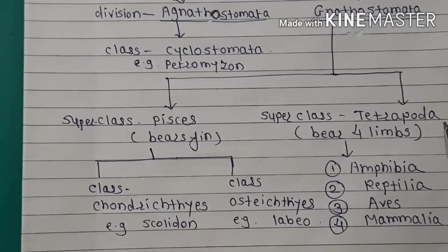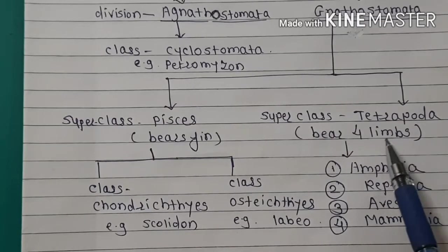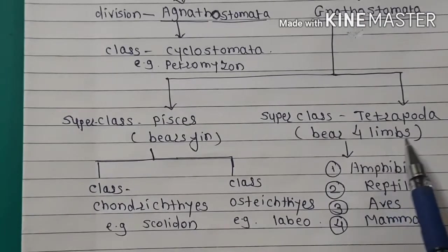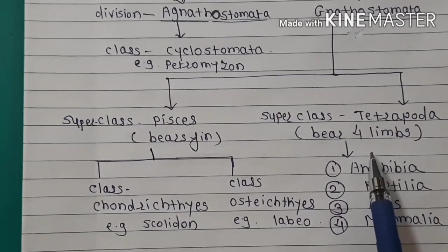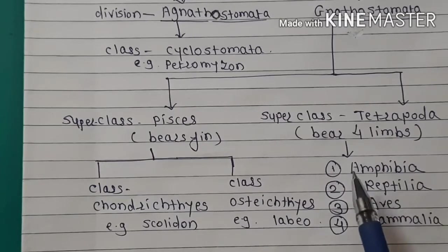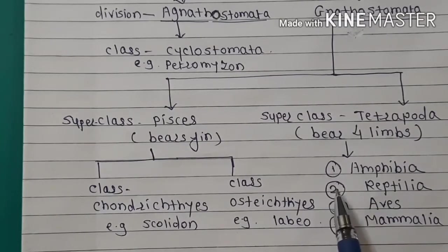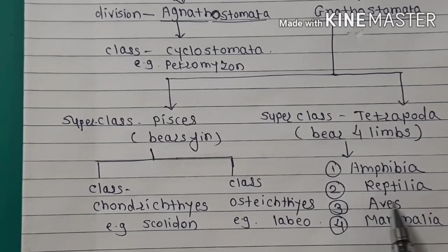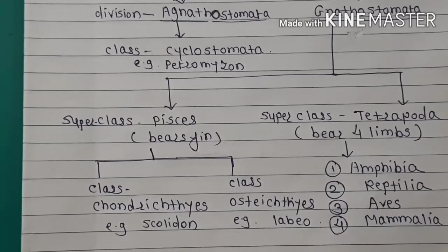The Tetrapoda consists the limbs, and some are limbless. It is divided into four classes: Class Amphibia, Reptilia, Aves, and Mammalia.